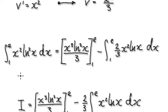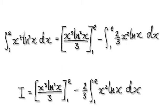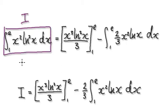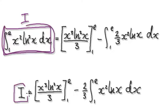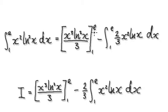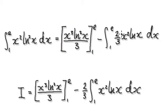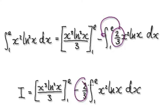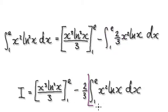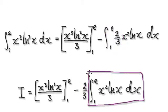Let's call this whole remaining integral capital I to make it simpler. Capital I equals the same integral, but notice the 2/3 is a constant, so we take it out front. That then gives us a simplified expression to work with.